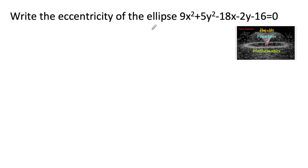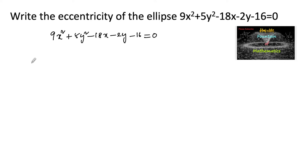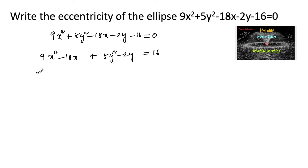Find the eccentricity of the ellipse 9x² + 5y² - 18x - 2y - 16 = 0. Let us write it in standard form by simplifying: 9x² - 18x + 5y² - 2y = 16.